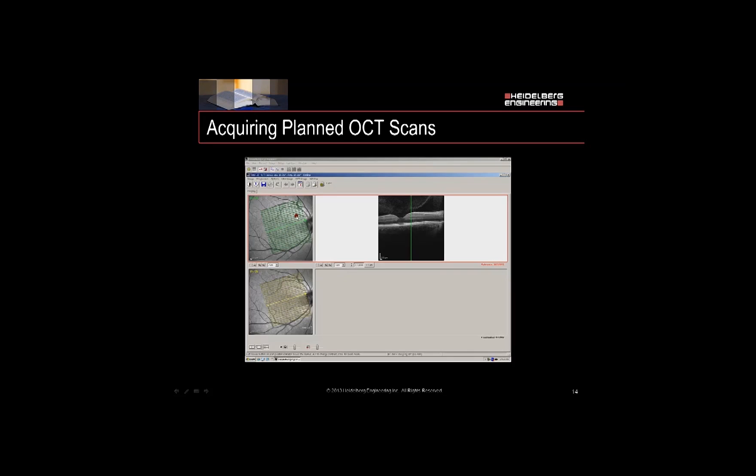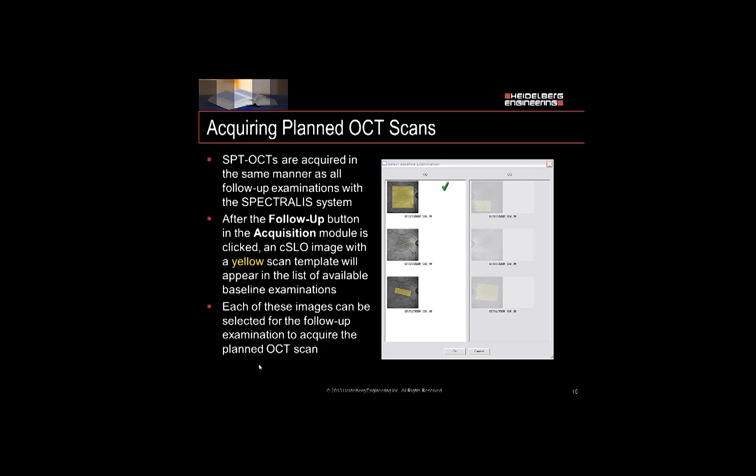Let's review acquiring a planned OCT scan. Planned scans are acquired in the same manner as all follow-up examinations in the Spectralis system. Scans will show up in the follow-up menu, color-coded yellow so you know the difference. Multiple scans can be acquired in a single setting.